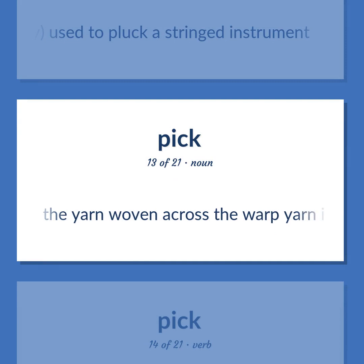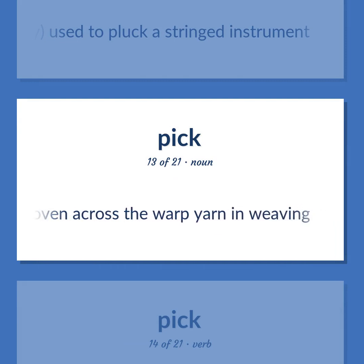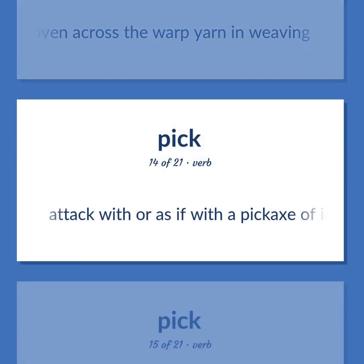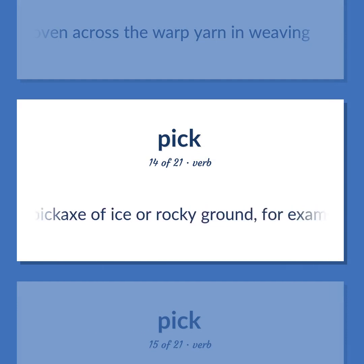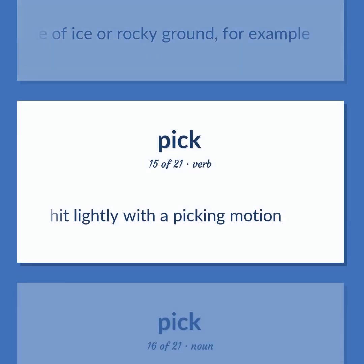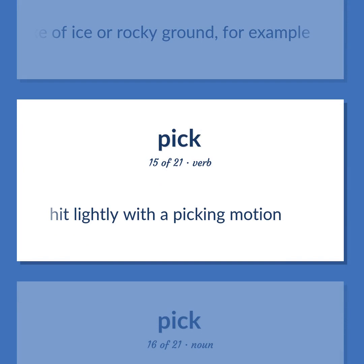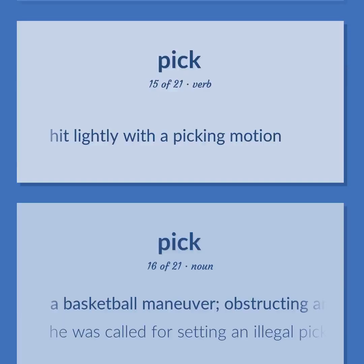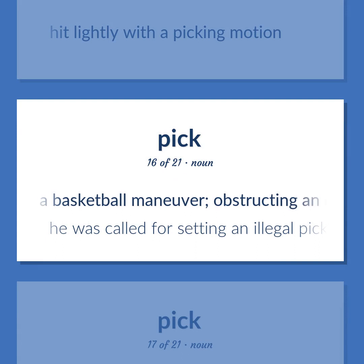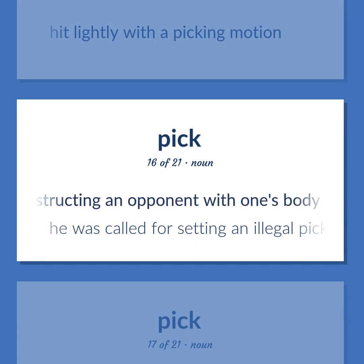Pick: the yarn woven across the warp yarn in weaving. Also, to attack with or as if with a pickaxe, for example on ice or rocky ground. Also, to hit lightly with a picking motion. In basketball, a maneuver obstructing an opponent with one's body — 'He was called for setting an illegal pick.'